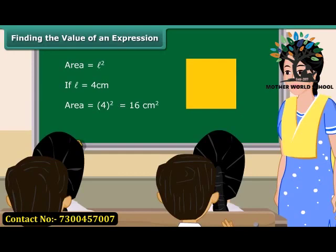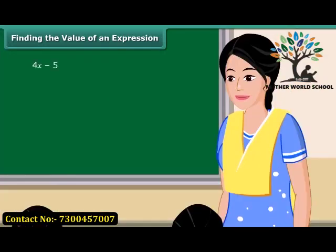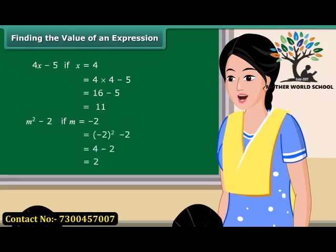Consider the expression 4x minus 5. If the value of x is equal to 4, then the given algebraic expression is equal to 4 into 4 minus 5, which is equal to 16 minus 5, that is 11. Similarly, if m is equal to 2, then the value of the expression m square minus 2 will be equal to 2.